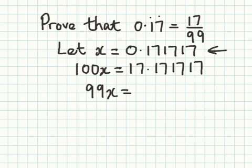And 17.171717 take away 0.171717 just gives me 17. You can see where it's leading as you go through the sum. The final step, x equals 17 over 99.